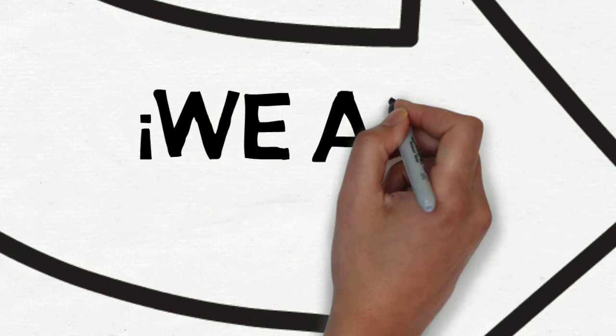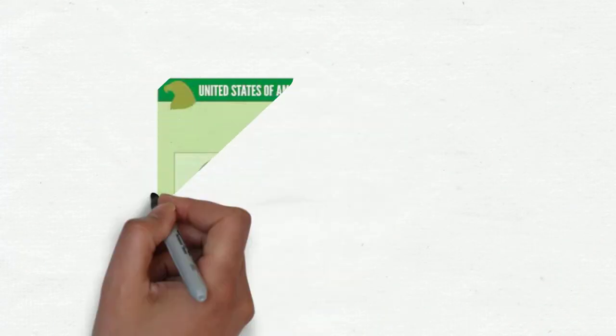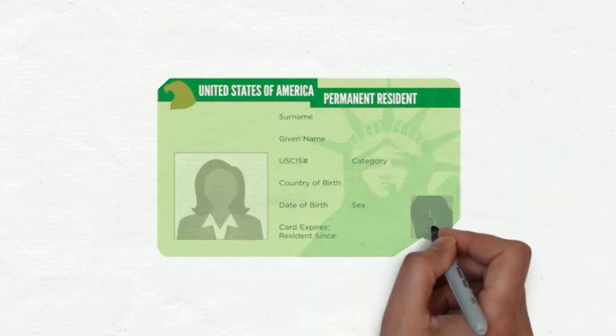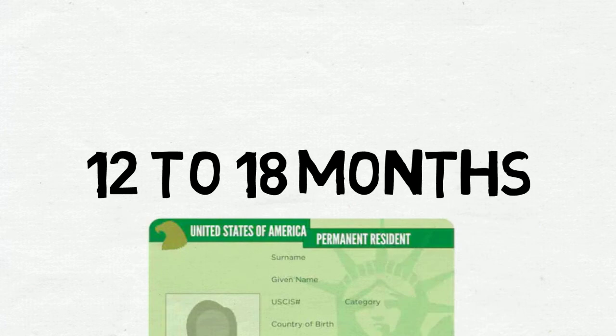The second preference category is something you won't believe, and the good news is that we are experts. We are very certain that we can get your U.S. green card in a period of 12 to 18 months. Let me tell you how it works.